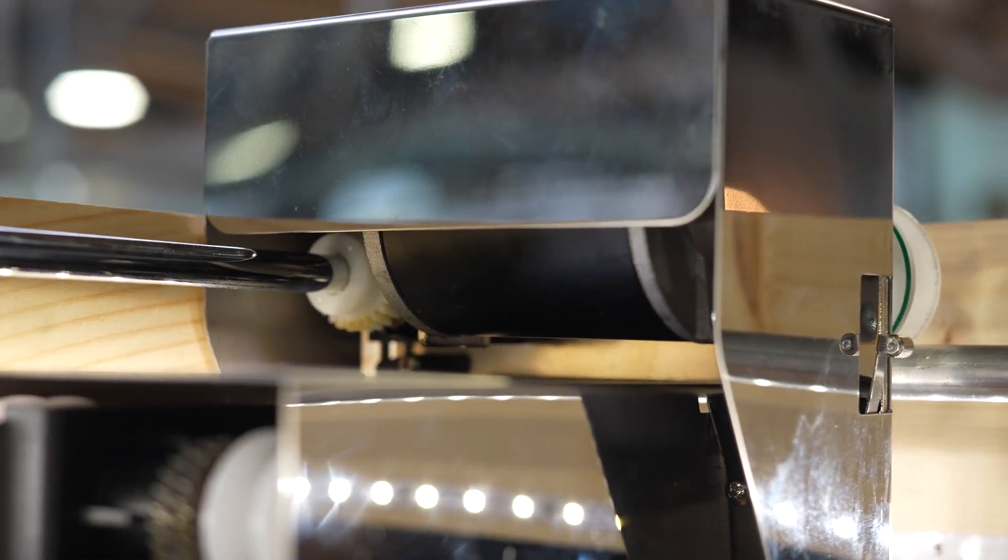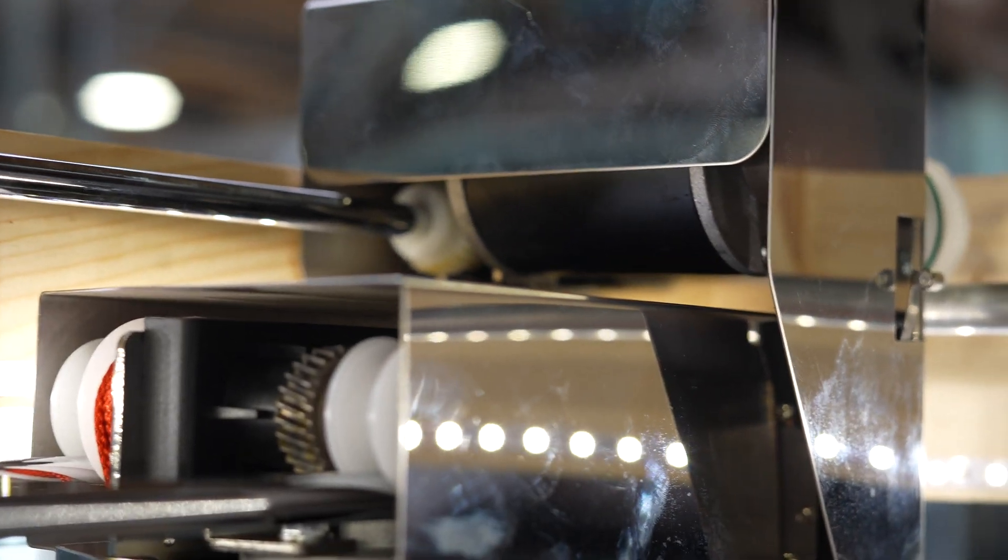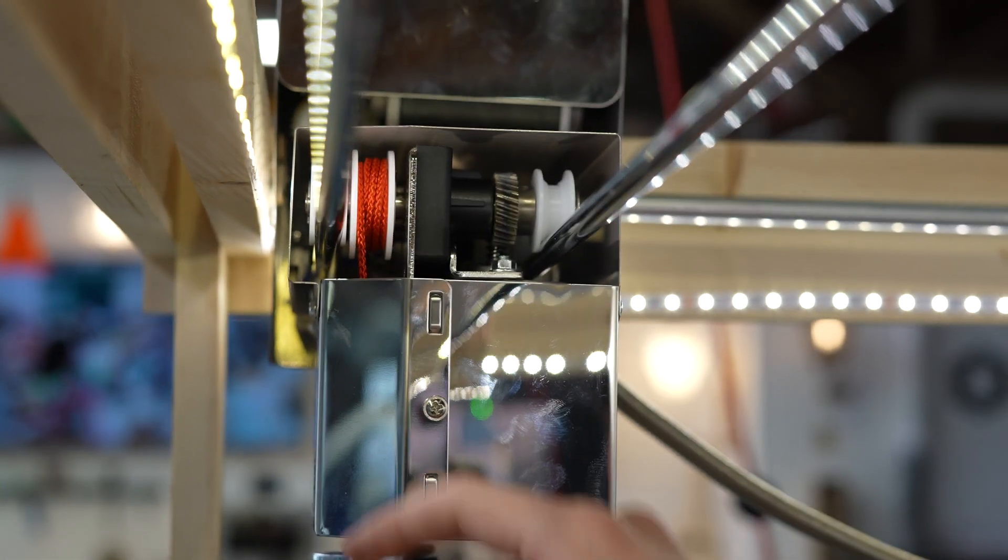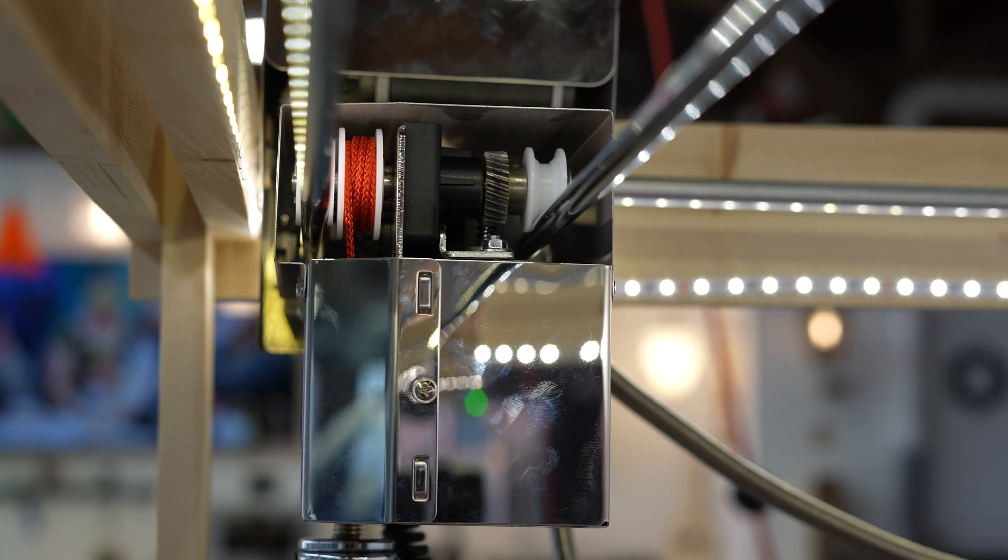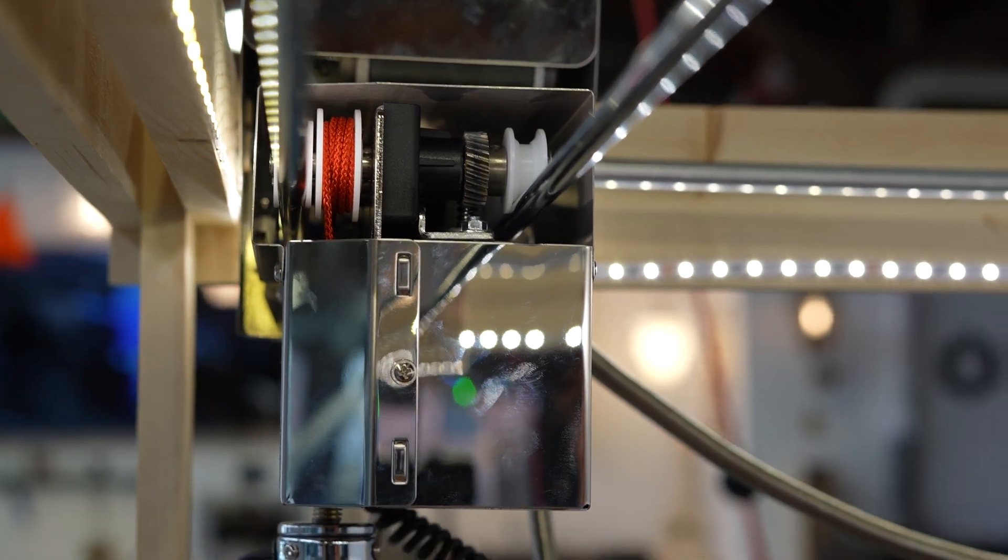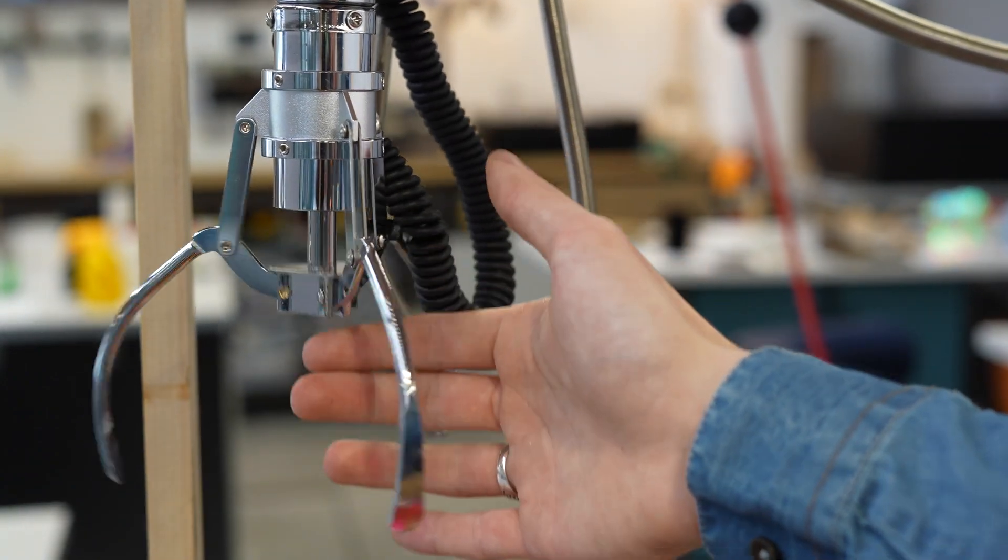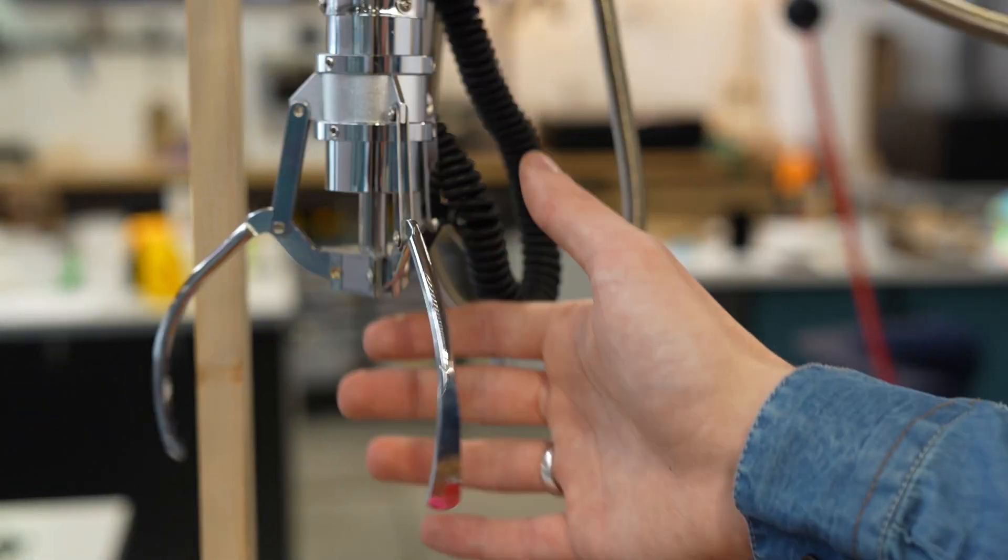Then another motor inside here which controls the left right position and a final motor to control this pulley system to drop and raise the claw. There's also this cable here which controls a little piston which controls the grip of the claw.